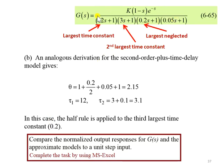From the transfer function, we need to identify the largest time constant, which is 12, and then the second largest time constant, which is 3. Remember that the equation needs us to find second-order, which means we need to have two time constants.